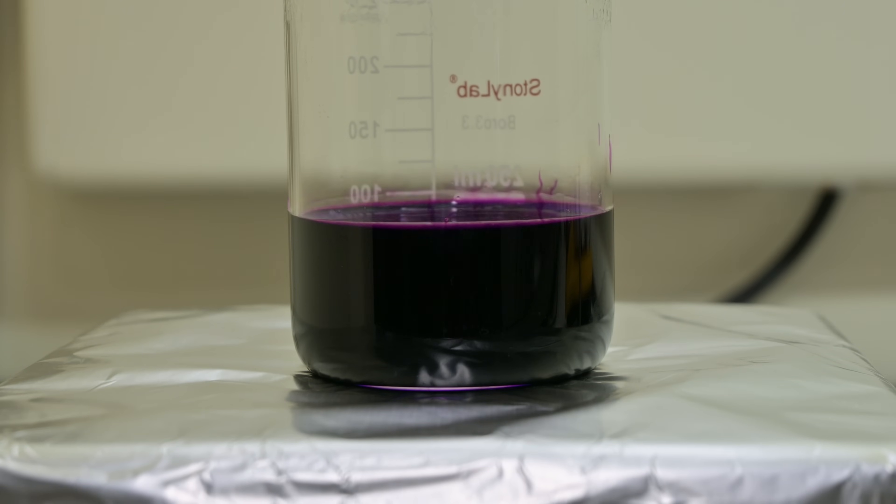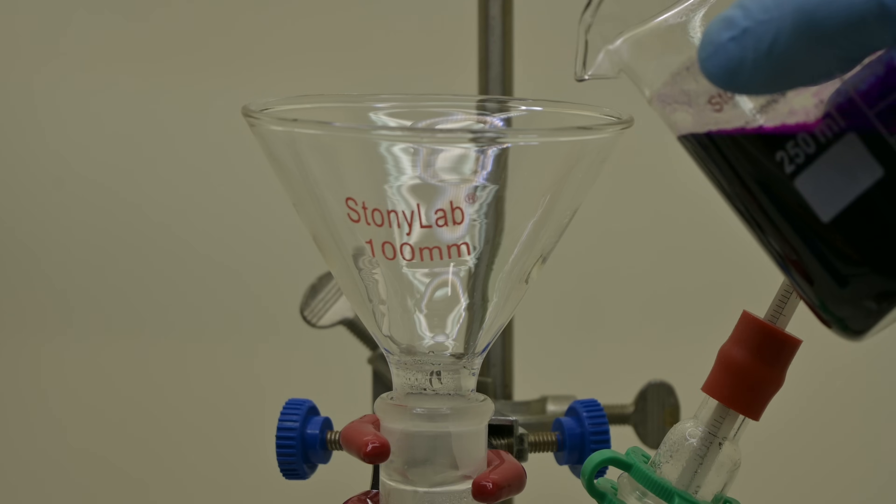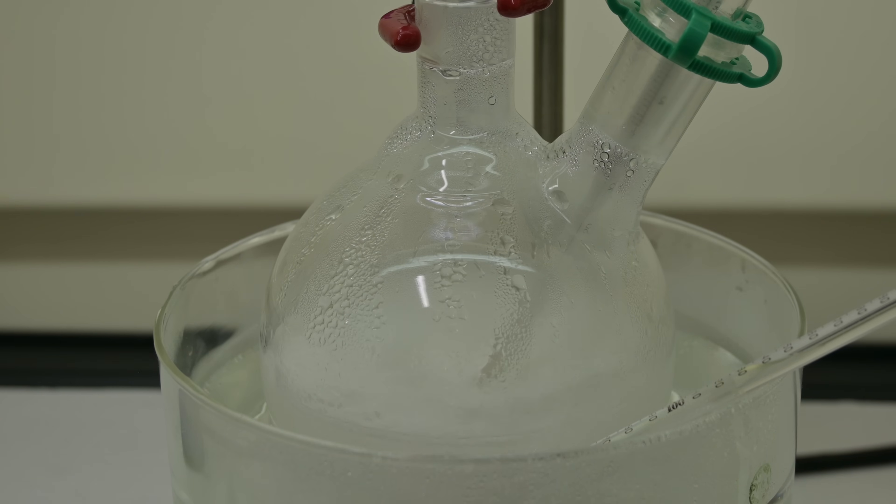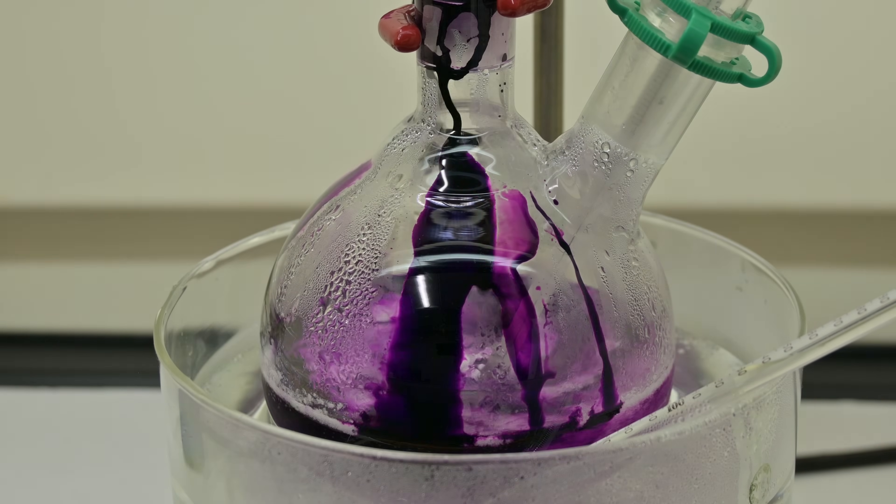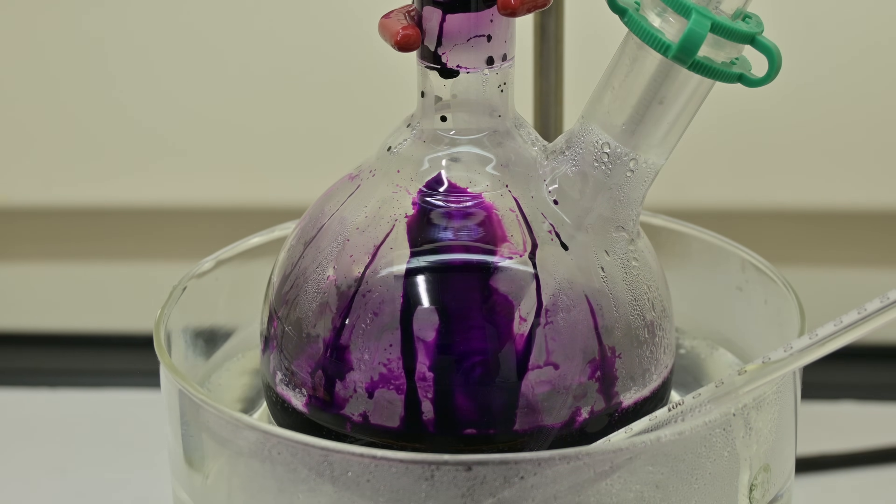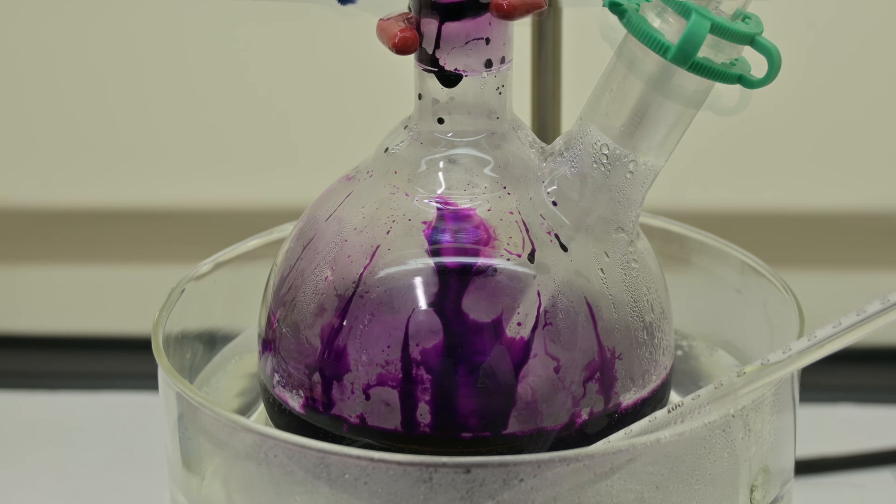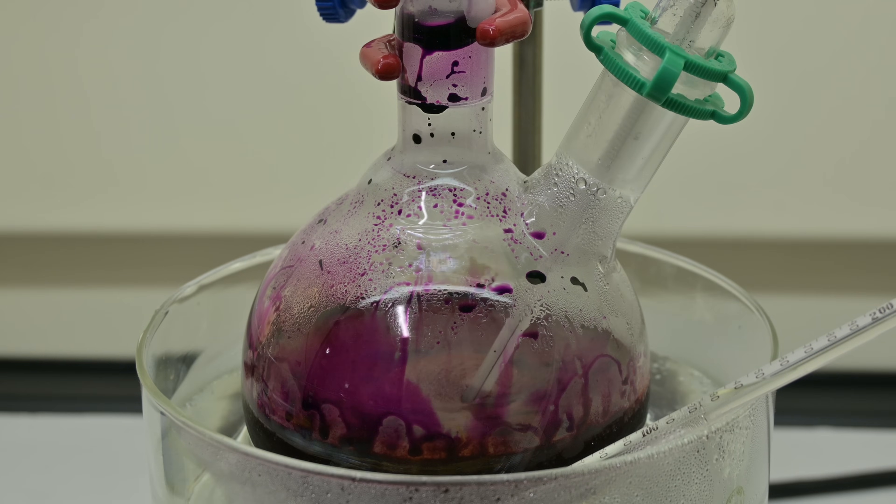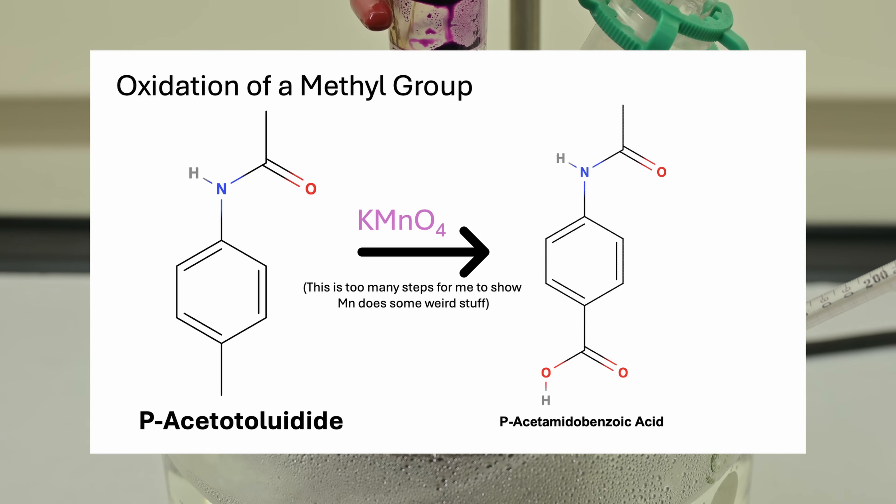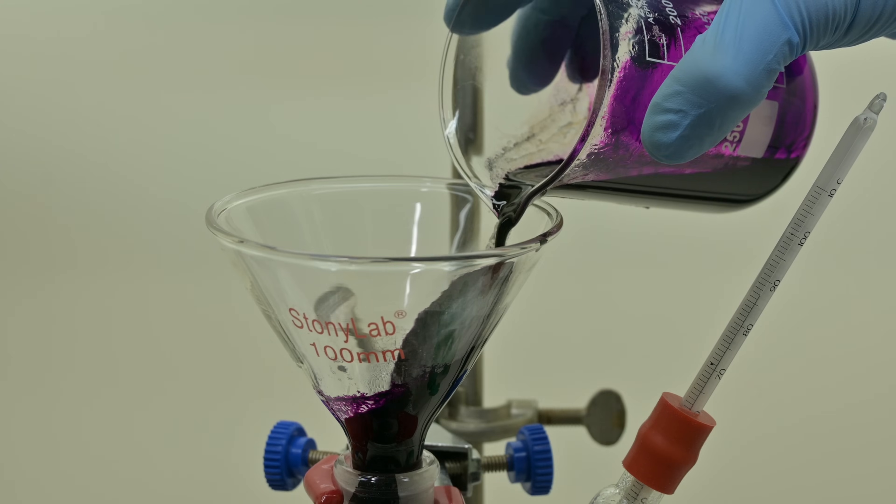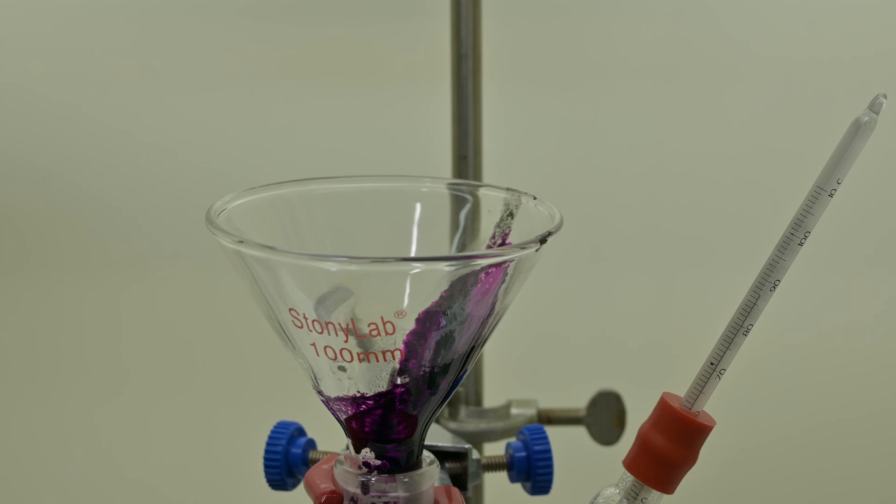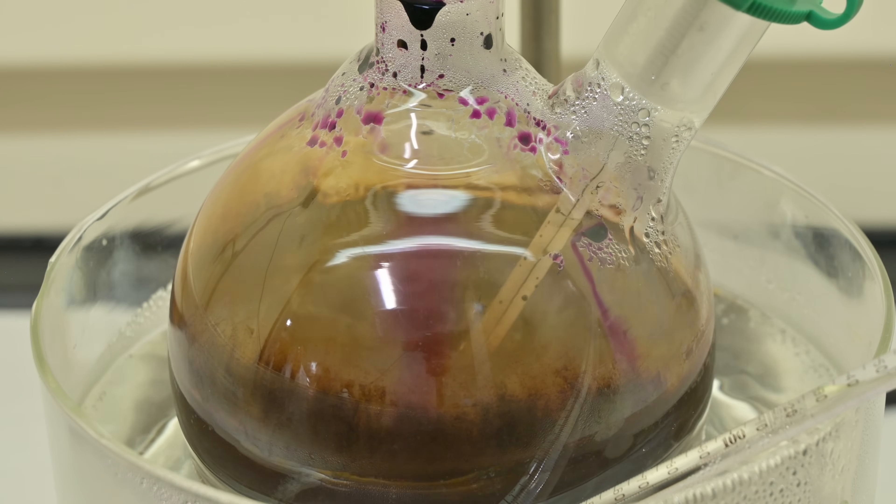Since permanganate can stain skin and destroy organics on contact, I'm making sure to wear gloves and goggles. Once both solutions are ready, I start oxidizing. I stir the hot p-acetotoluidide solution vigorously and begin to add the hot permanganate solution, a little at a time over the course of about 30 minutes. This part requires patience. Dumping it in too quickly risks over-oxidizing the product, essentially burning it up chemically and reducing our yield. So I add it slowly and keep things swirling to make sure it's evenly mixed, making sure the purple color doesn't build up too much at once.